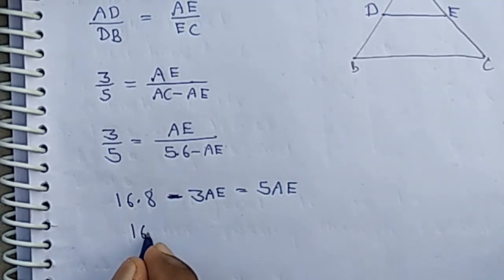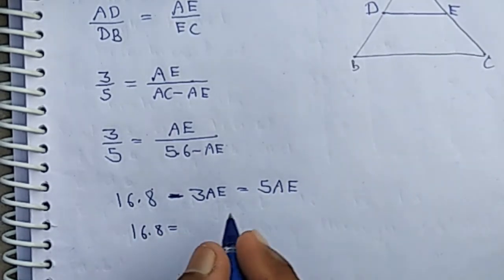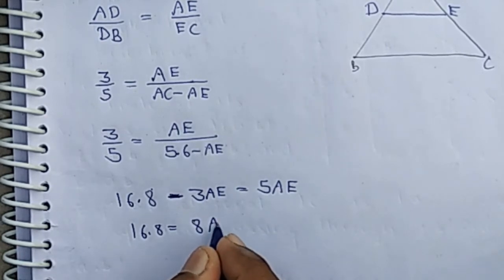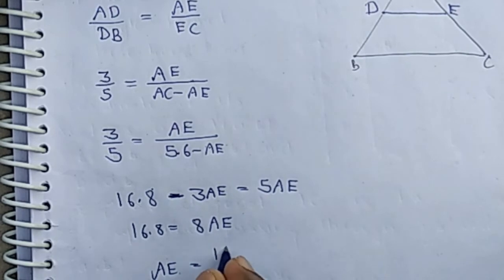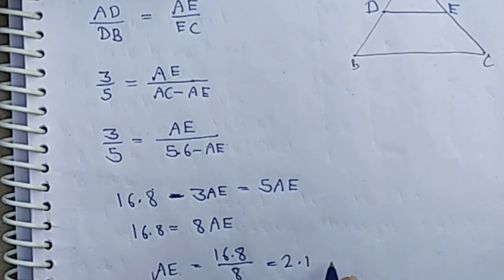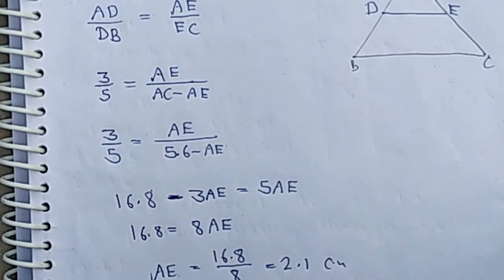This simplifies to 16.8 equals 3AE plus 5AE, which is 8AE. Therefore, AE equals 16.8 divided by 8, which is 2.1. And that is the answer.